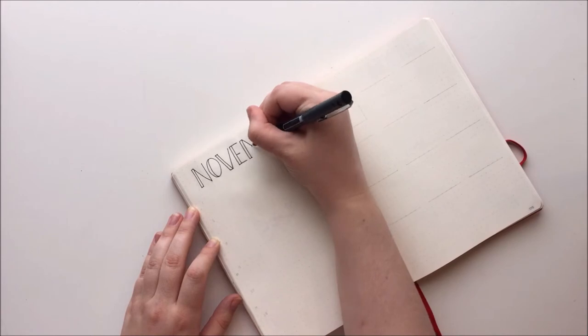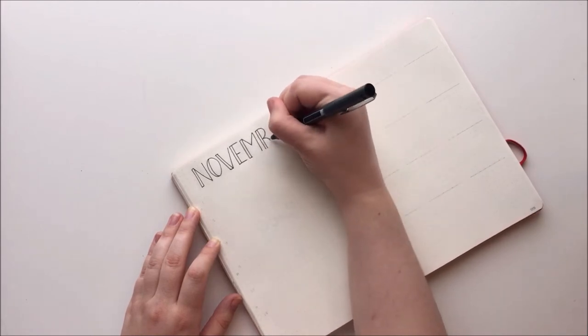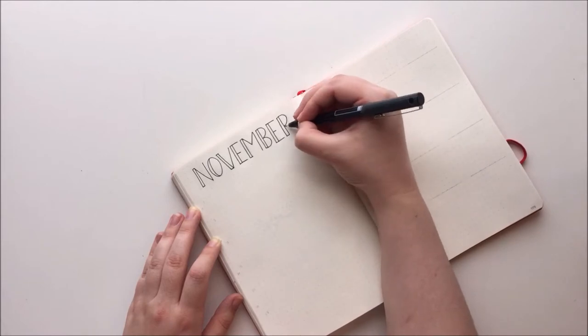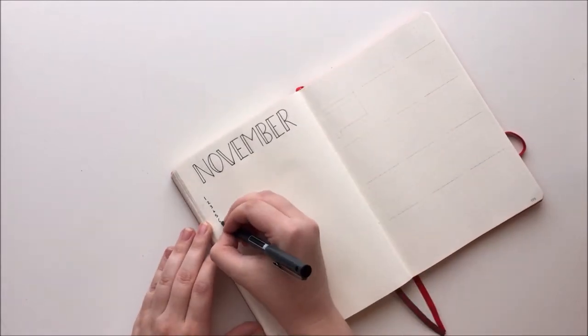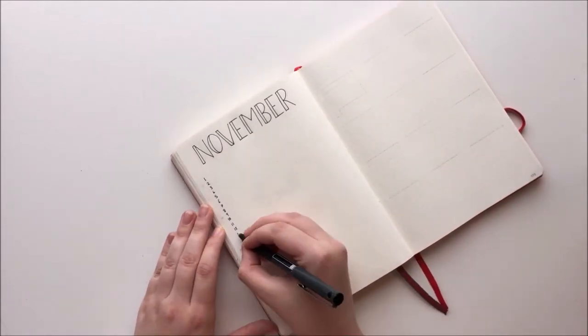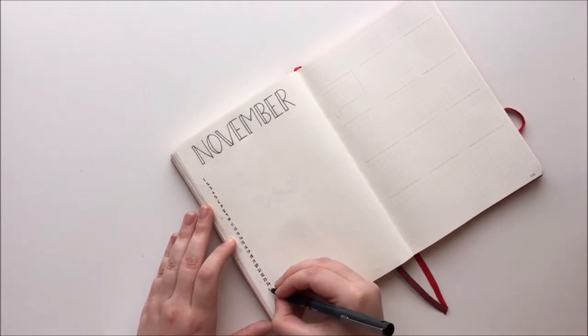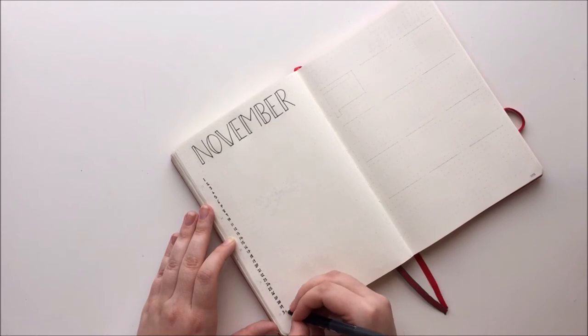First of all, I have my month at a glance page. For this, I just write the month really big at the top and then the days of the month down the side, along with which day of the week they are, to help me get a really good overview of the month. I love how title pages look, but they don't work for me because once they're done, I never really look back at them, so it just seems like a bit of a waste of time and paper.